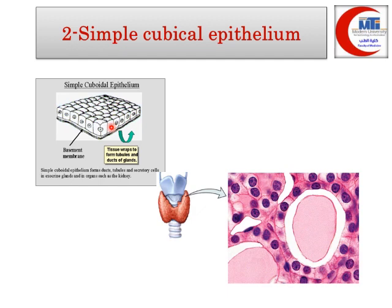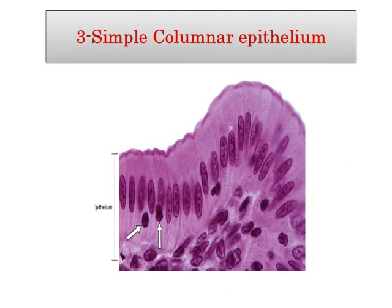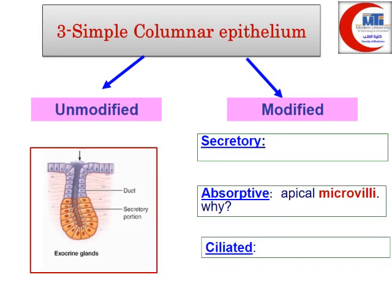Simple cuboidal epithelium is formed of one layer of cuboidal cells with central rounded nuclei. It is present in thyroid follicles — the rounded structures forming the structure of the thyroid gland — which are lined by simple cuboidal cells.